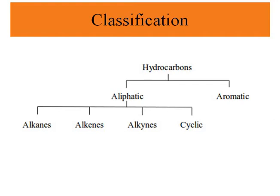Saturated hydrocarbons are the simplest form of hydrocarbon. They are composed entirely of single bonds and are saturated with hydrogen atoms. The formula for saturated hydrocarbons is CₙH₂ₙ₊₂. They form the basis of petroleum fuels and are found as linear and branched compounds. Examples of alkanes are methane, ethane, and propane.